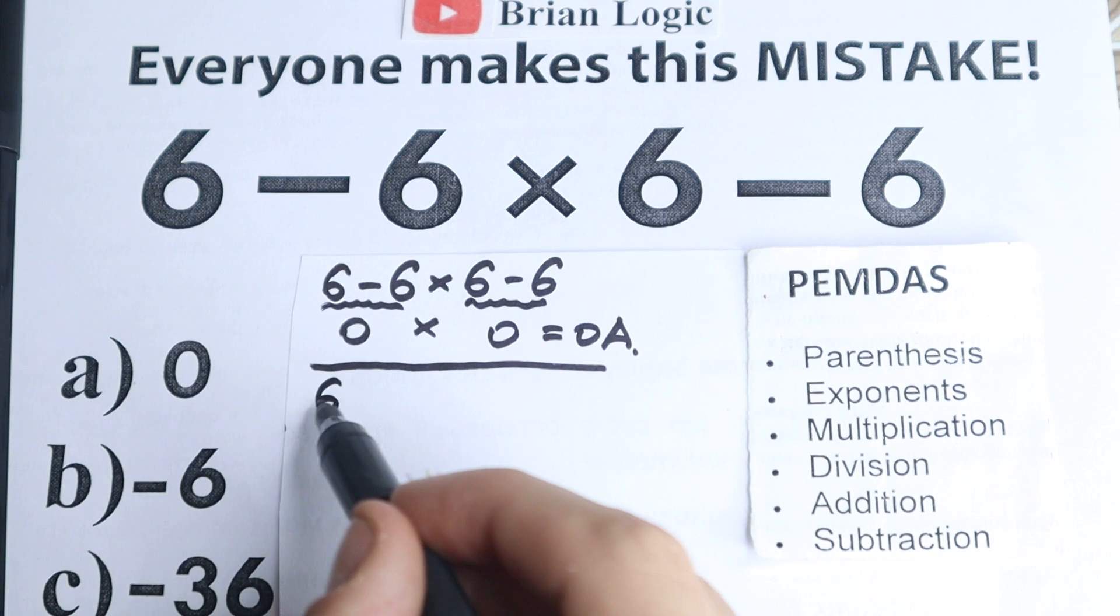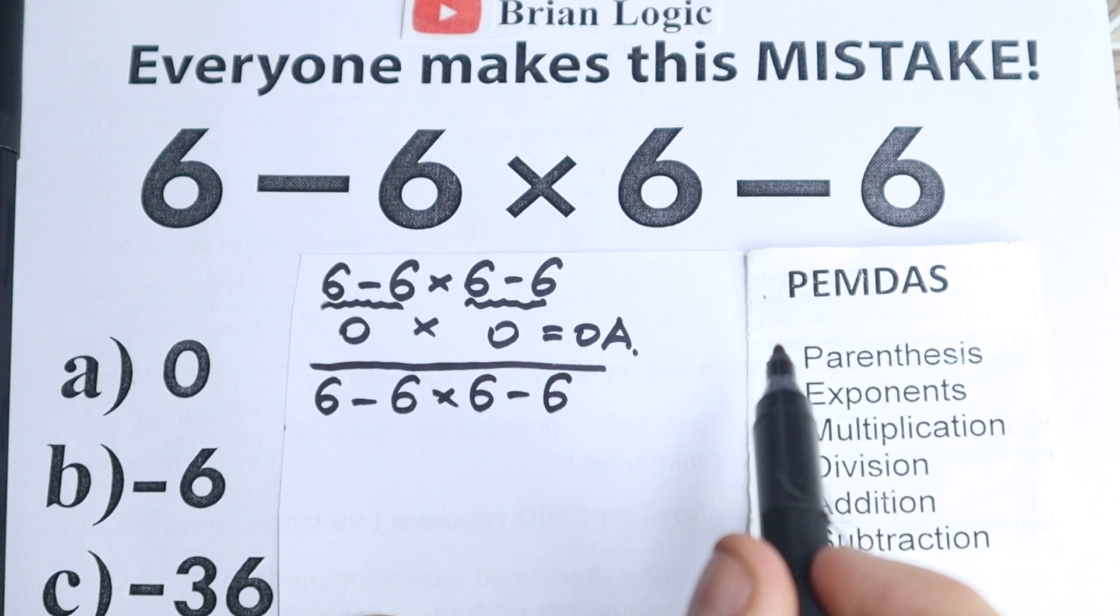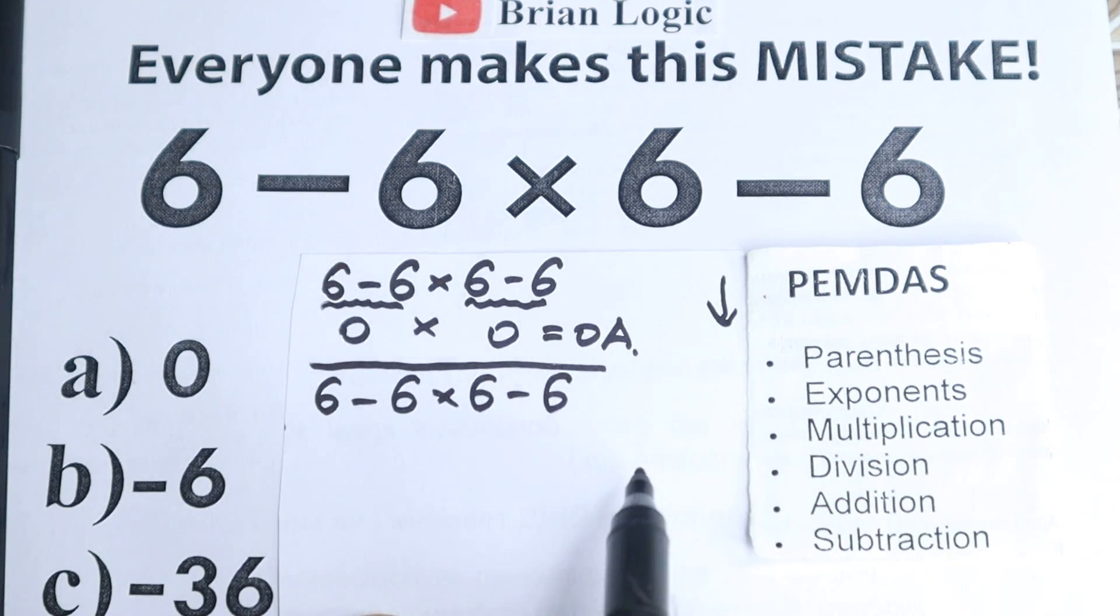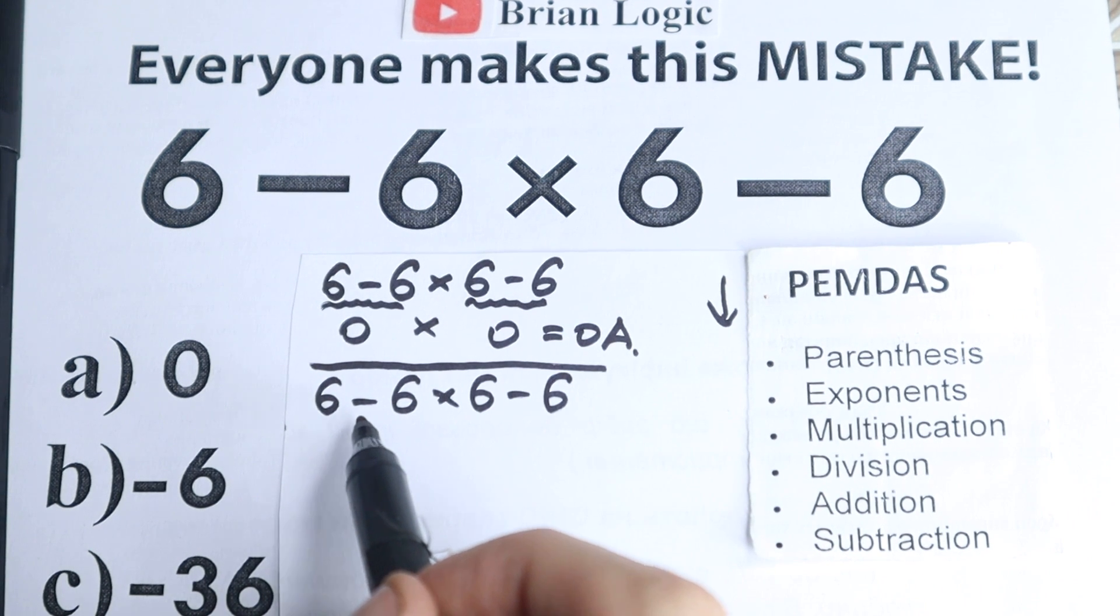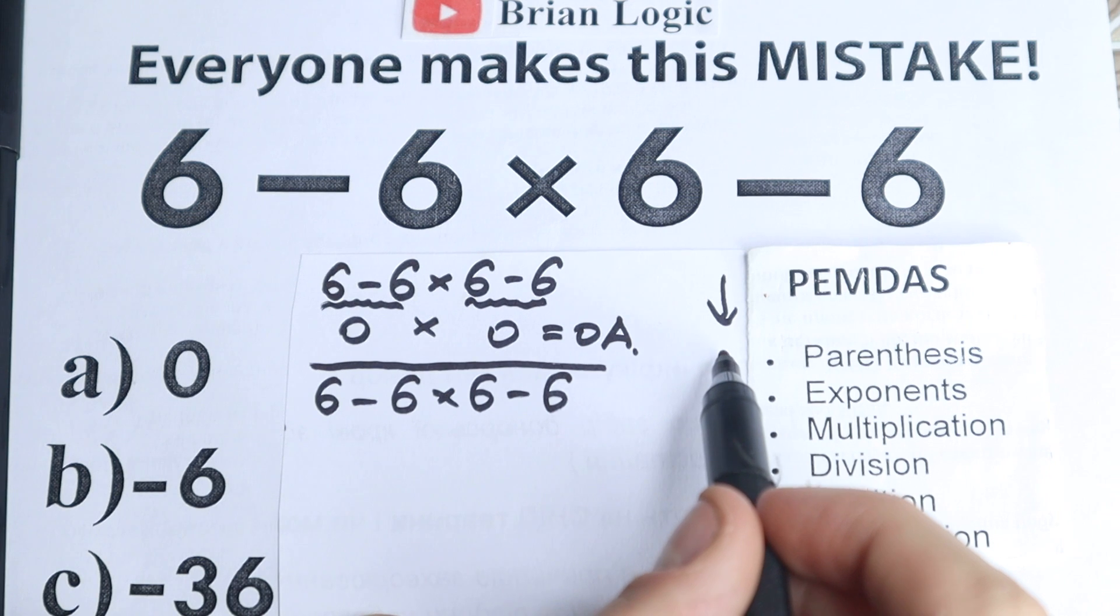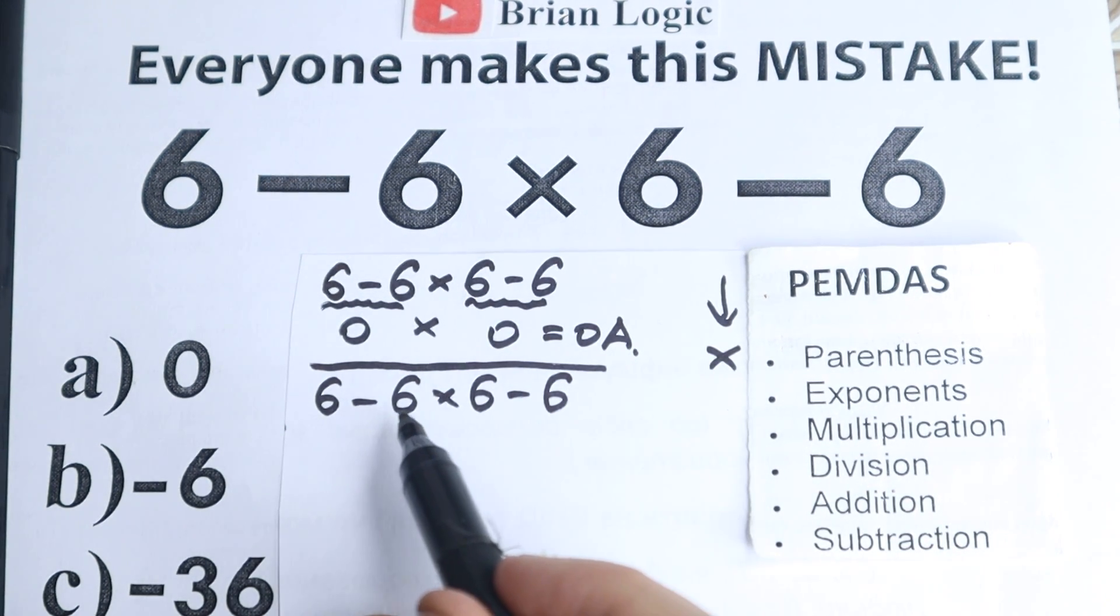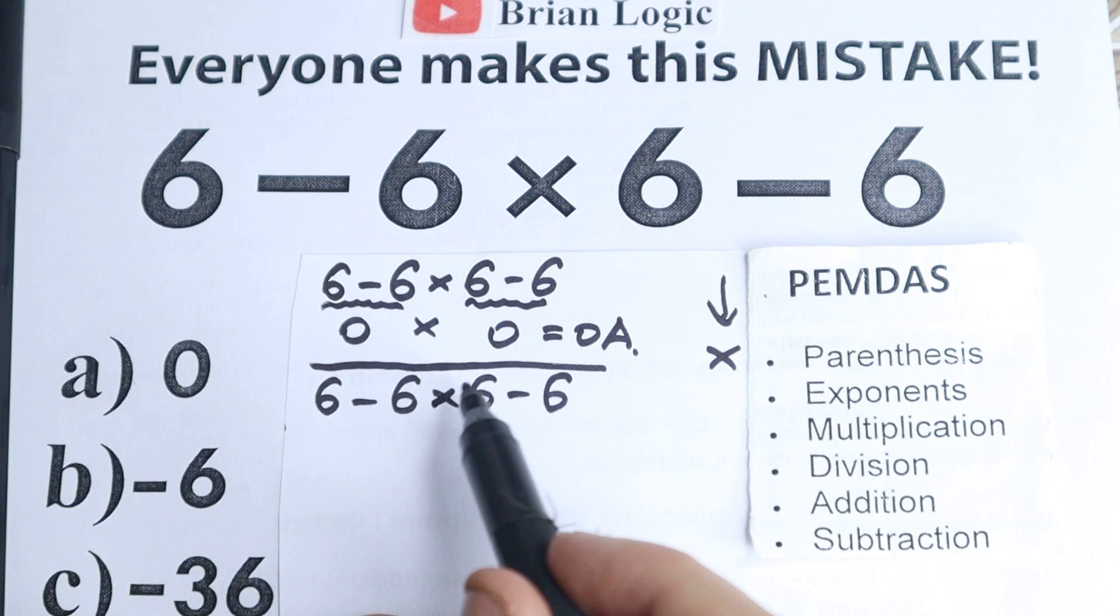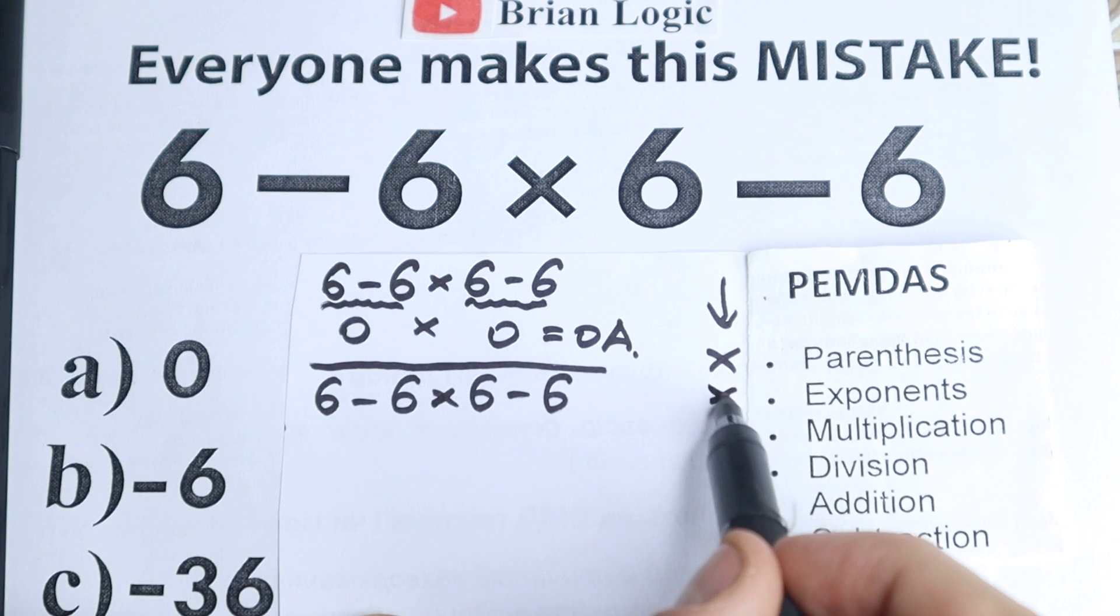Right now let's solve this question according to correct order of operation. So 6 minus 6 times 6 minus 6, let's solve according to PEMDAS from top to bottom. First step is parentheses. As I told before, we don't have any parentheses. We just skip this part. Exponents? I don't see any squares or cubes right here, so we can easily go to the next step.